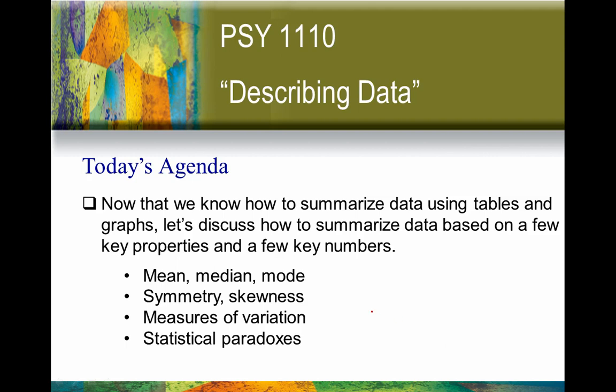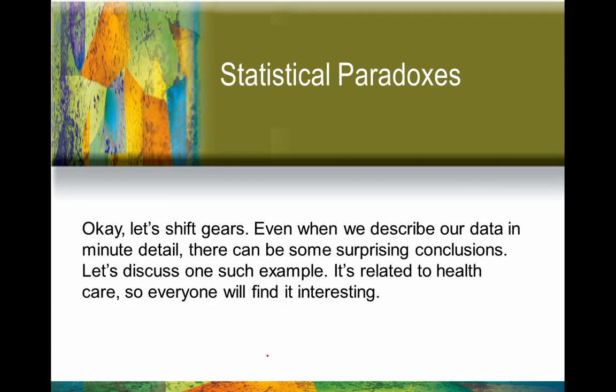Welcome back. Let's finish up chapter four by talking about this last section: statistical paradoxes. We've been talking about how to summarize our data using some key numbers, and sometimes these key numbers will reveal something very strange — something you really wouldn't have expected from your data. I'm going to show you an example that will kind of blow your mind. We're going to shift gears and look specifically at health care.